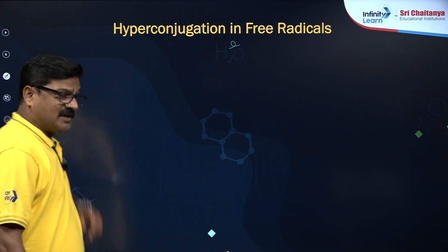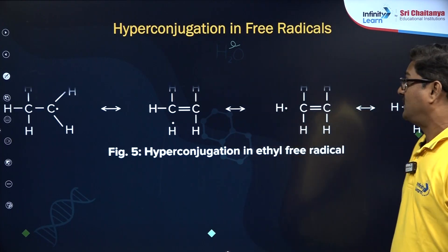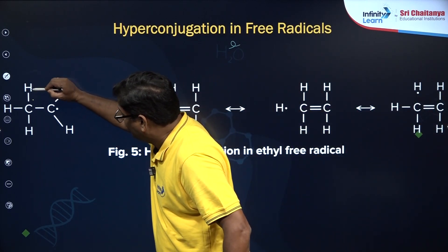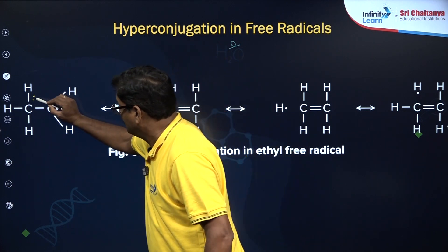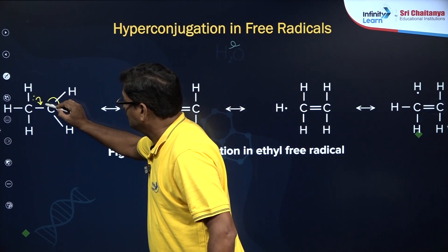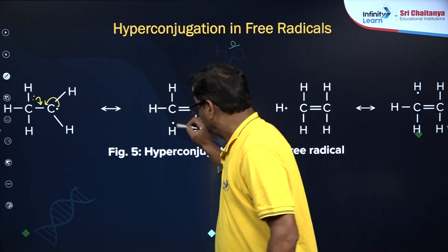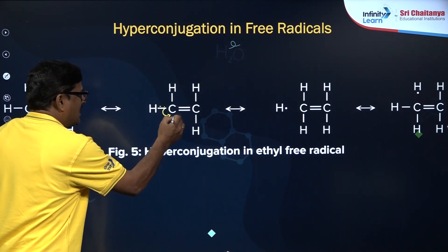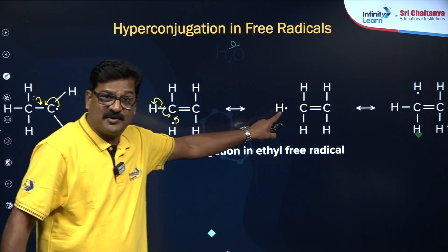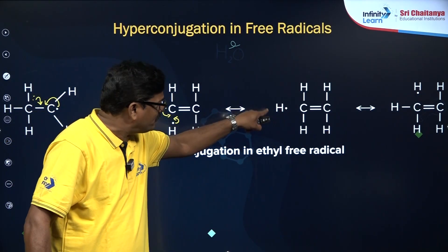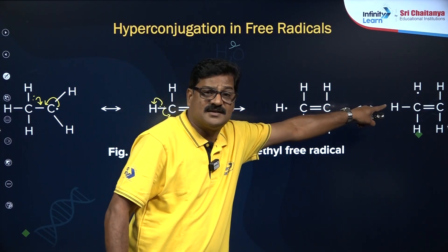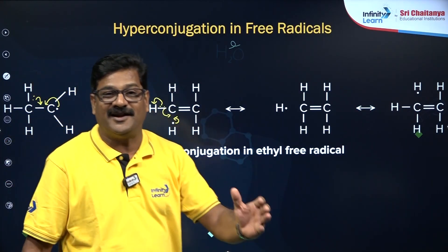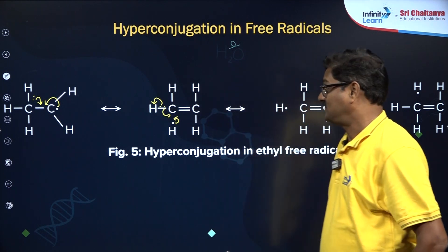Hyperconjugation can also be seen in free radicals. There is a bond and homolysis takes place; as a result a pi bond is formed, giving multiple homolysis structures. There is a carbocation and a hydrogen free radical in a delocalized system without any bond. In free radicals, hyperconjugation is also found and it stabilizes them.